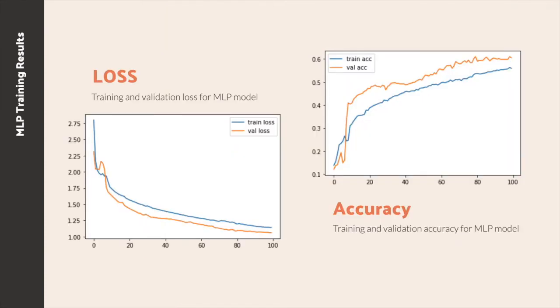Our multilayer perceptron model contains three linear layers. In the training process, training accuracy converges to 55.9% and validation accuracy converges to 60.5%.